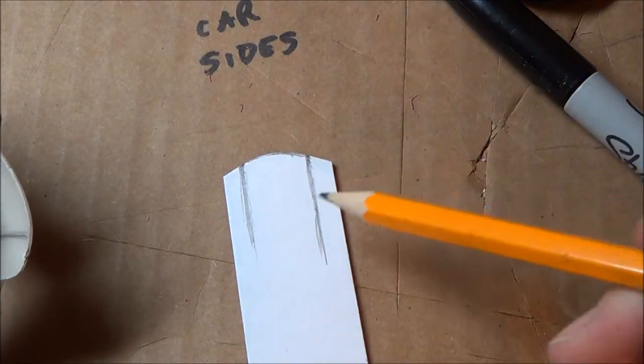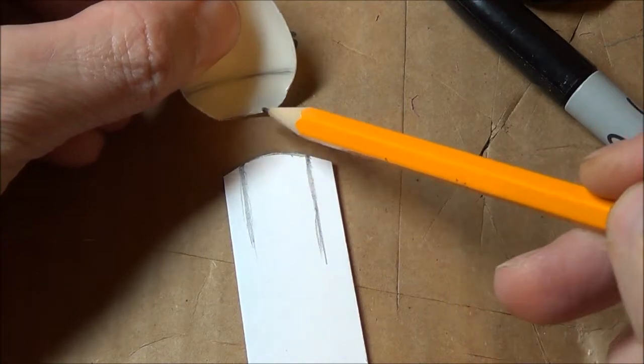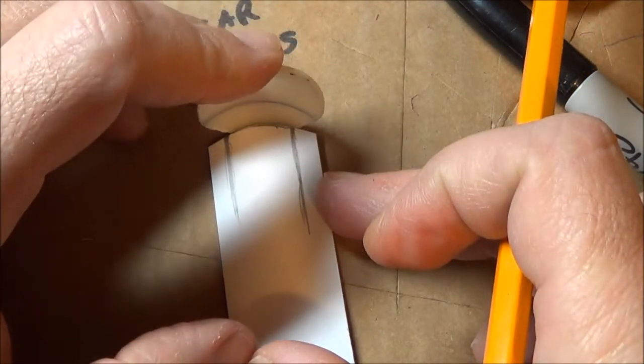Alright, so we're going to work on the floorboard. As you can see, I already cut the curve that's going to go basically inside the spoon like this.